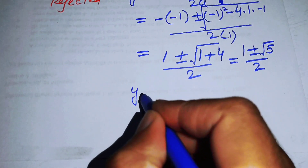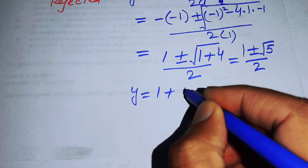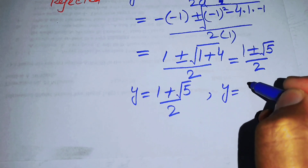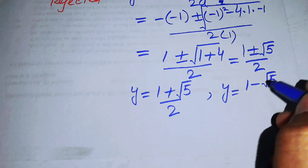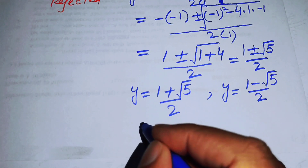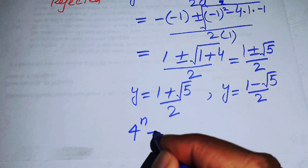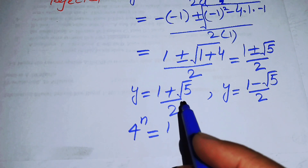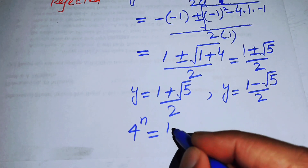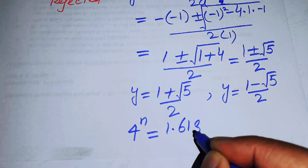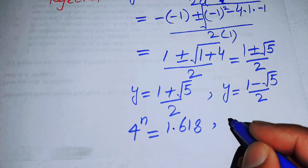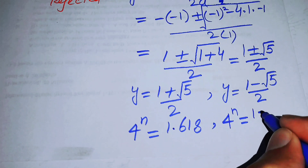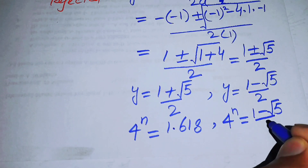The first case is y equals (1 plus square root of 5) over 2, and the other case is y equals (1 minus square root of 5) over 2. Since y equals 4 to the power of n, substituting the first case gives 4 to the power of n equals approximately 1.618.